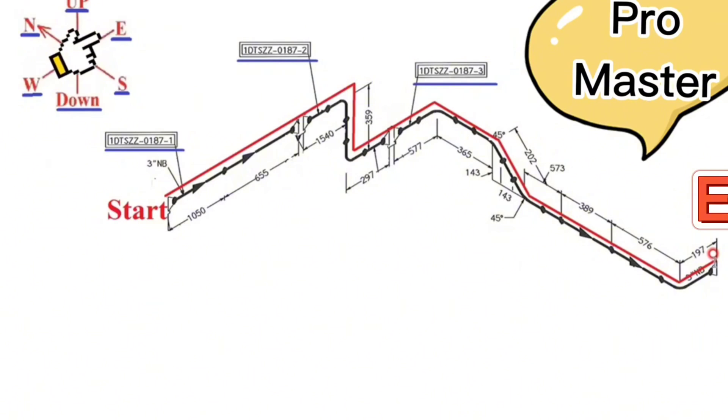The reading of the pipe isometric is finished. There is a note here that the size of the pipe is 3 inches.